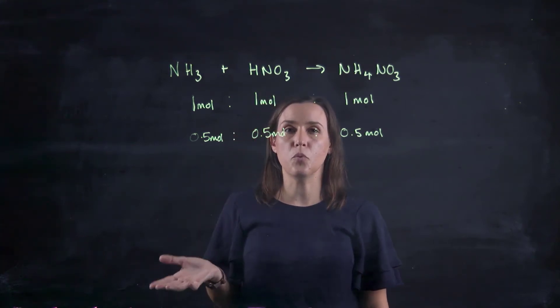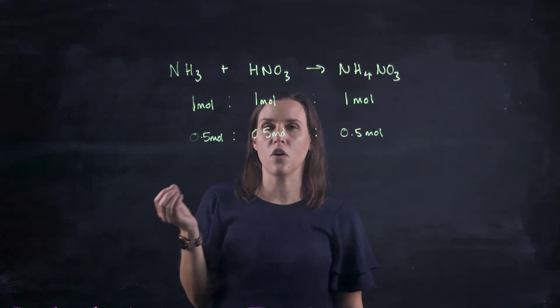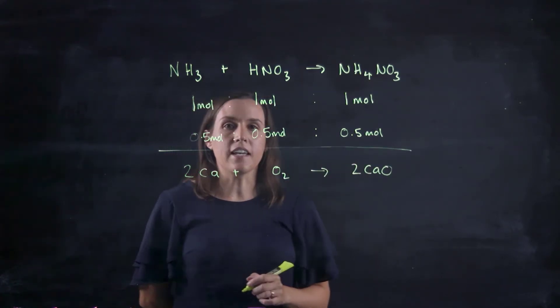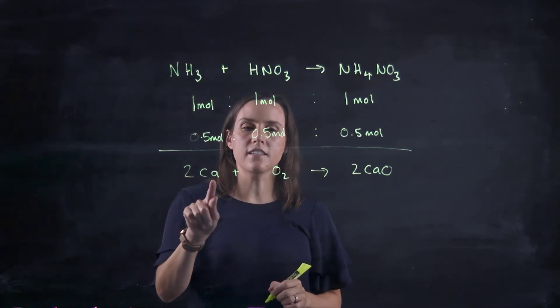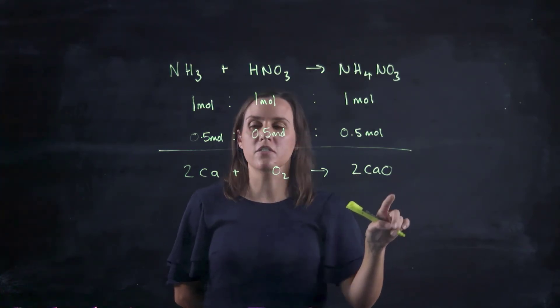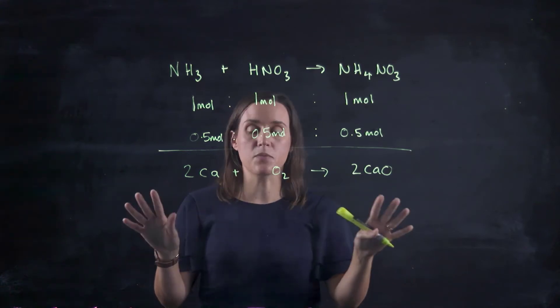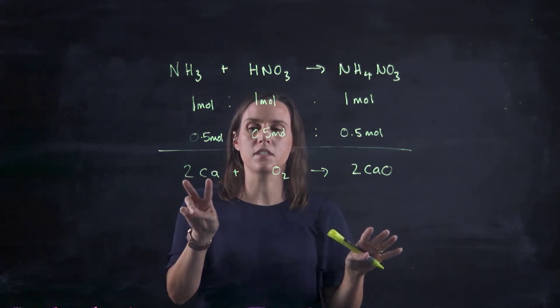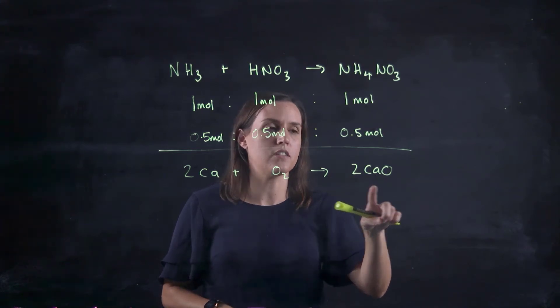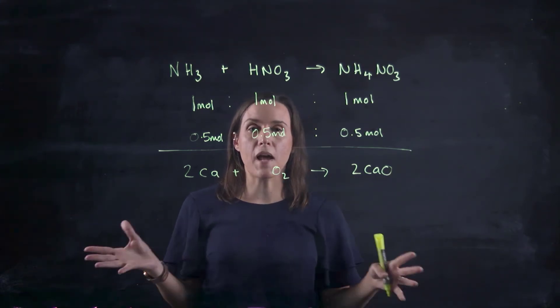Now another example we'll have where we have different coefficients. Okay, so this one here, we've got 2Ca + O2 gives us 2CaO. So checking that it's balanced, this one looks balanced, but we've got two calciums, two calciums, two oxygens, and we've got two out the front, so we've got two oxygens. So it's a balanced reaction.